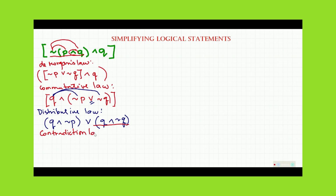We use the contradiction law because the connector is 'and'. The truth value of Q and negation of Q will always give you a false statement. For a conjunction to be true, both statements must be true — but since one is the negation of the other, this is always false. That is why we apply the contradiction law.